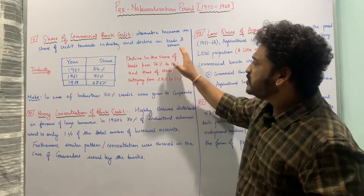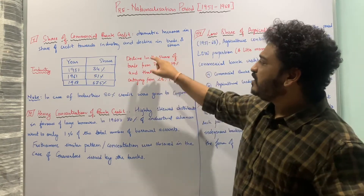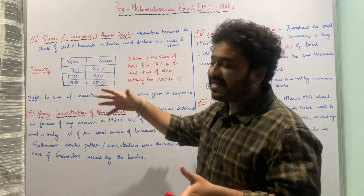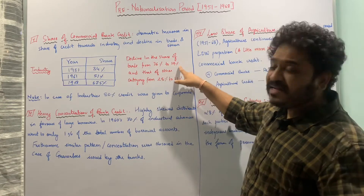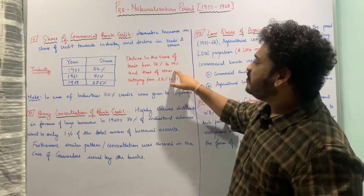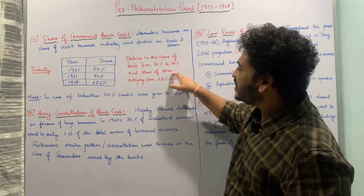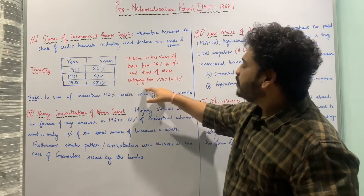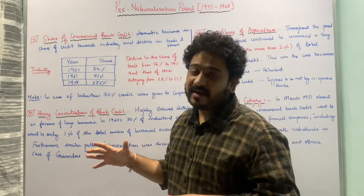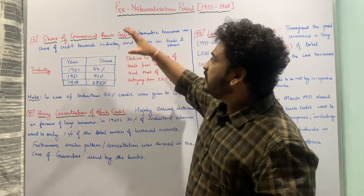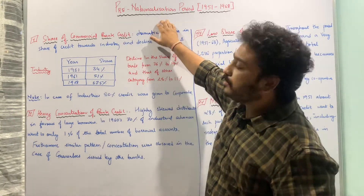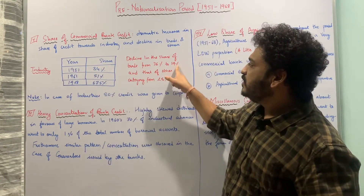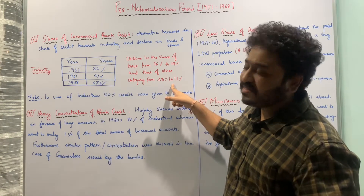On the contrary, the share of commercial banking credit towards trade declined from 36% to 19%, and the other miscellaneous category declined from 28% to 11%. So the credit share transformed significantly during the pre-nationalization period — moving more towards industry and declining in trade and miscellaneous categories.